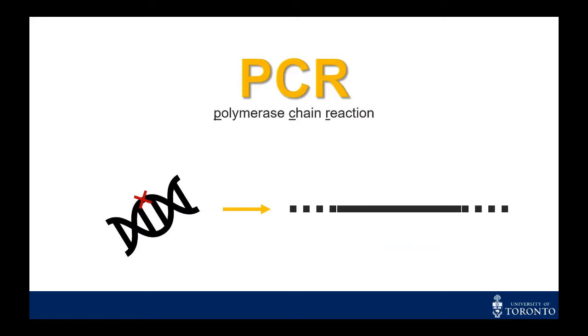But, if we knock out the gene, then the primers can no longer bind and make copies of this gene.